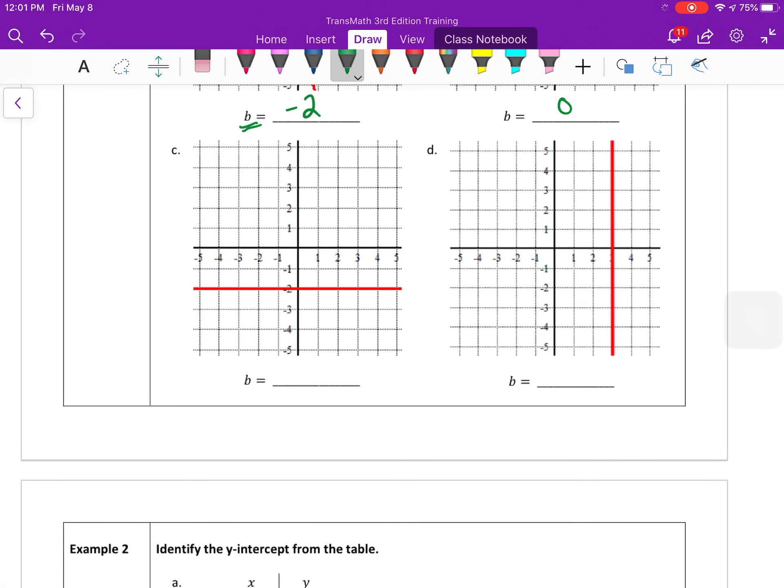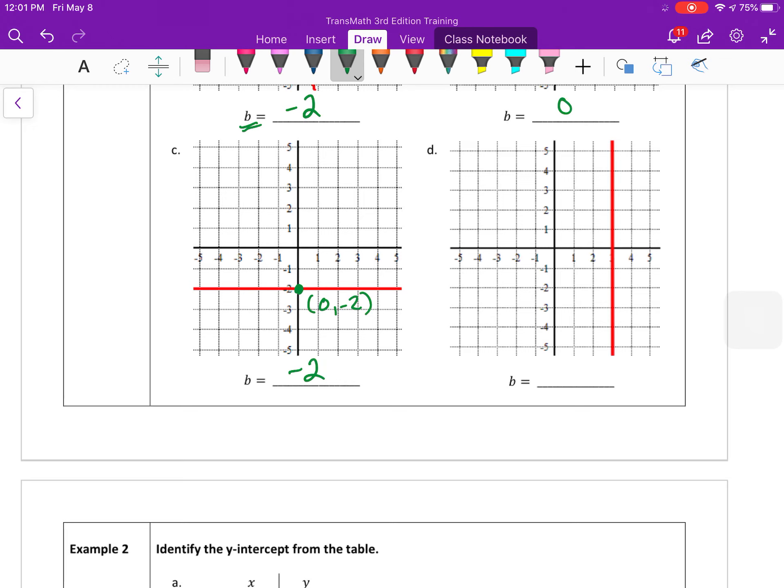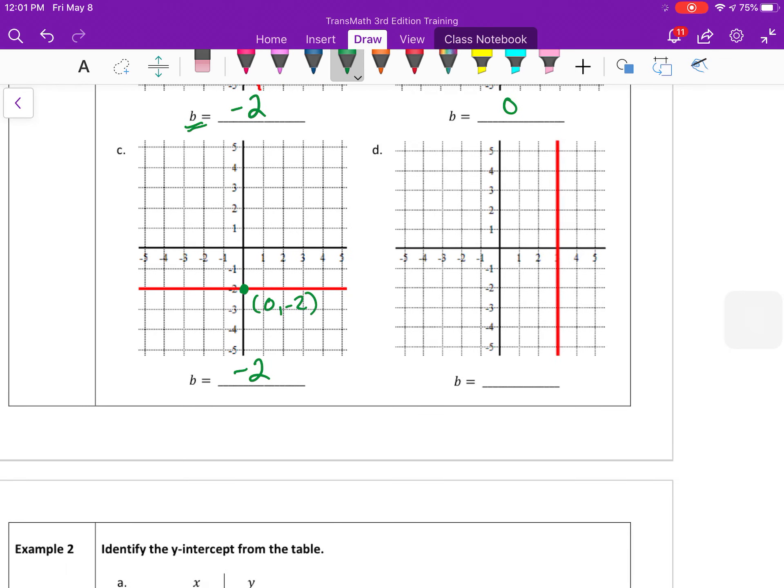Horizontal line intersects the y-axis at 0, negative 2. So the y-intercept is at negative 2. And this is a vertical line, which means it's going to go on forever. However, it runs parallel to the y-axis, so there is none. There is no y-intercept for that line. And this one also has a slope that's undefined, if you remember that.